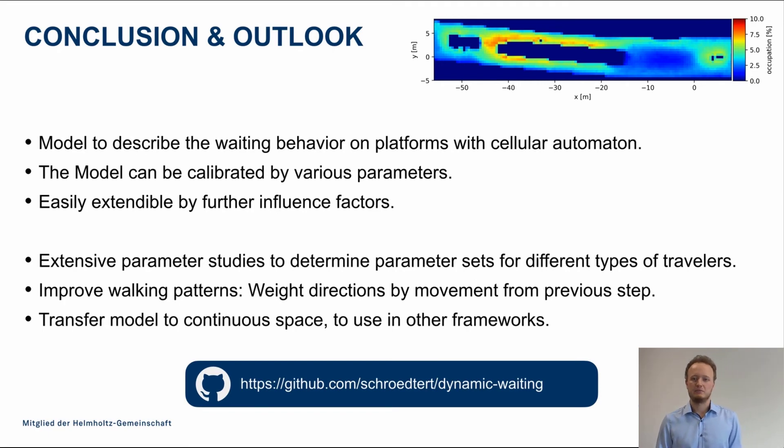Also, there need to be some improvement on the walking pattern. At the moment, it happens quite often that pedestrians move in small circles, or move back and forth, and this might or can be improved if we would weigh the movement back direction, depending on the previous step, to enforce that pedestrians are more likely to walk in a straight line than to turn around in a sharp 180 degree turn. And most importantly, the model needs to be transferred to a continuous space, so it can be used in other frameworks. If you want to play around with this model, you can find the Python implementation on GitHub with the link below. And with that, I would thank you for your attention, and I'm happy to answer any of your questions.